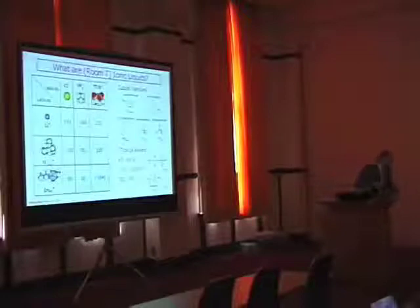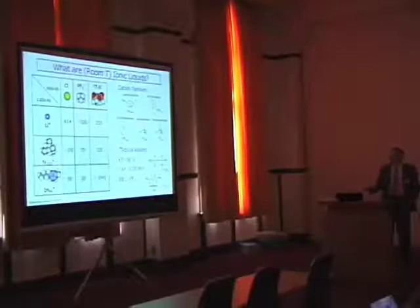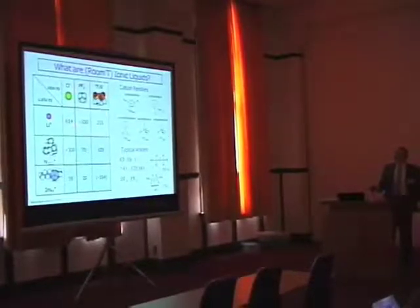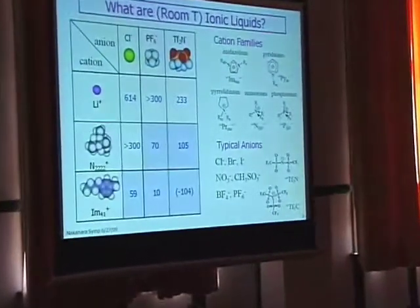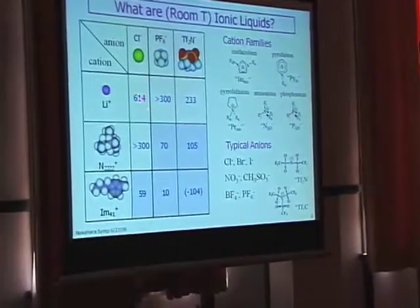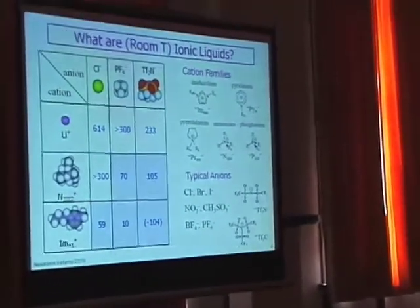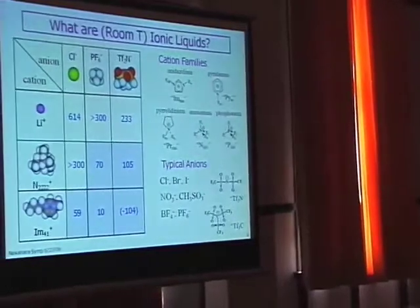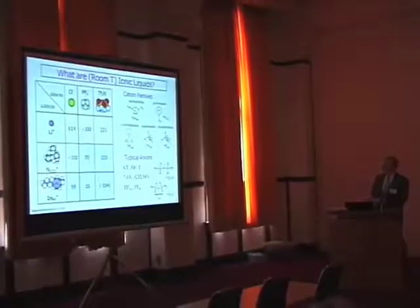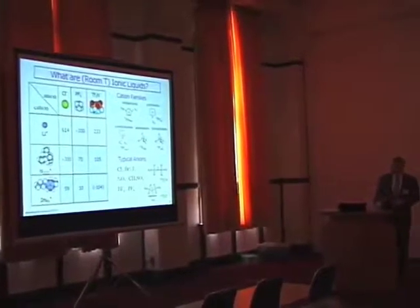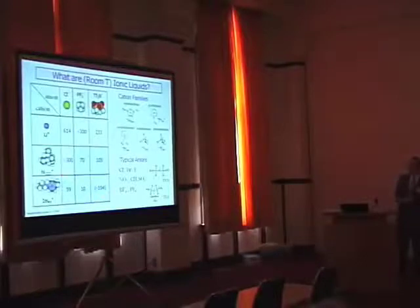So first of all, I won't spend a lot of time on what are ionic liquids or what are room temperature ionic liquids. They're not really fundamentally different from inorganic molten salts. Lithium chloride melts at something like 600 degrees Celsius. The main difference between what we call ionic liquids these days and molten salts is we've brought the temperature down so that they're liquid at room temperature or at least below 100 degrees.